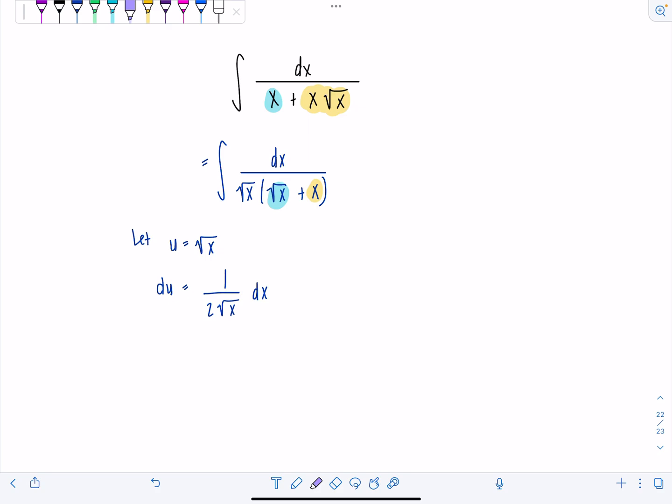And notice I have 1 over radical x dx, just not 1 over 2 radical x dx. So that means 2 du is 1 over radical x dx. And that matches exactly what I see in my integral right there. So I'm ready to rewrite things in terms of u now instead.